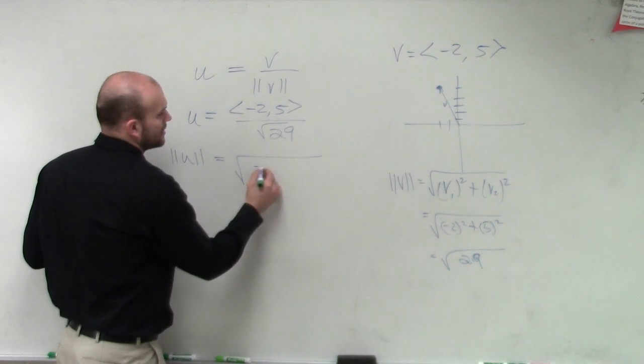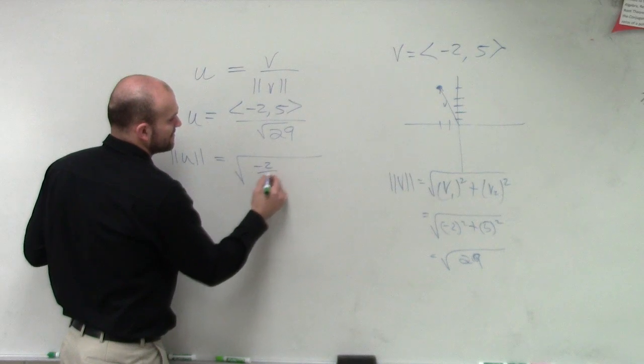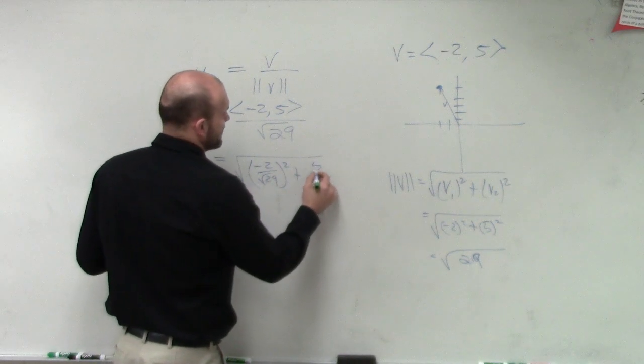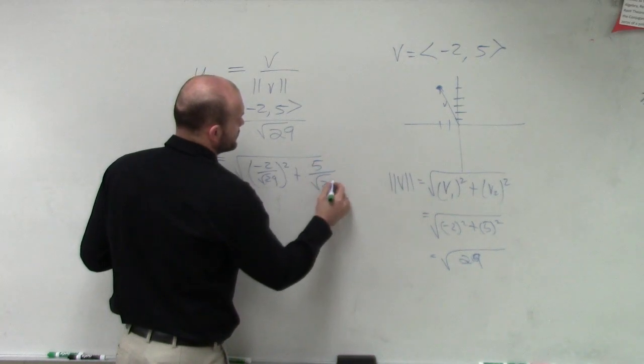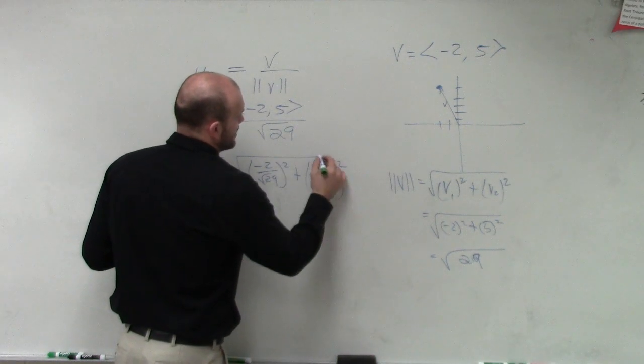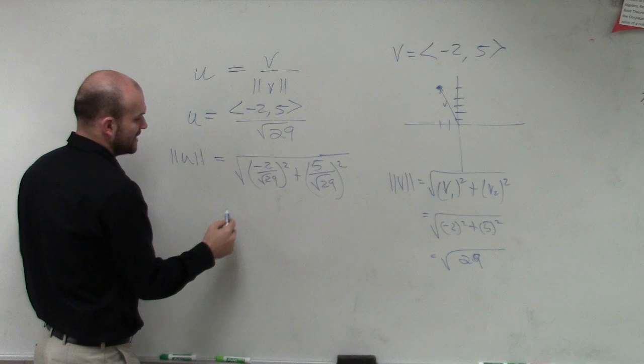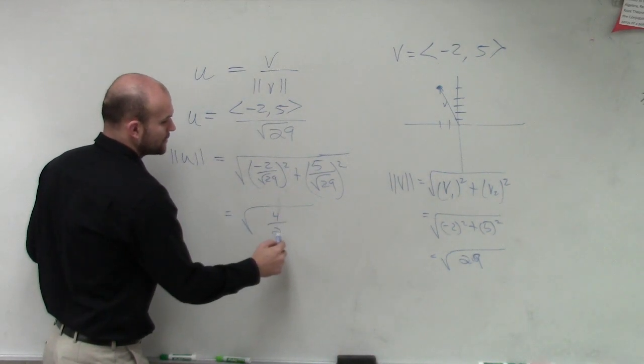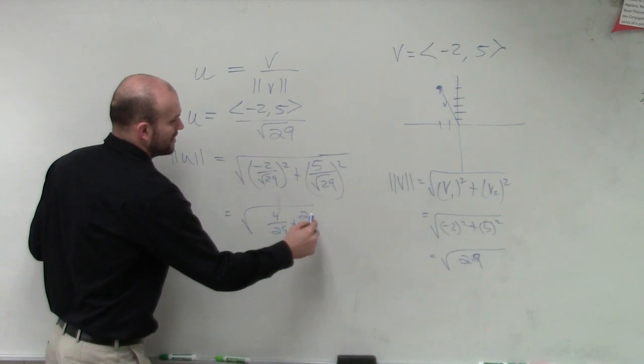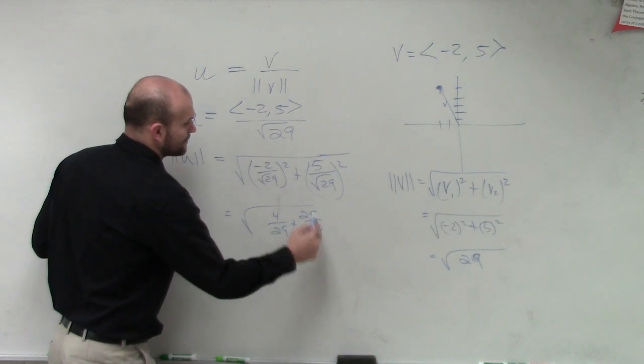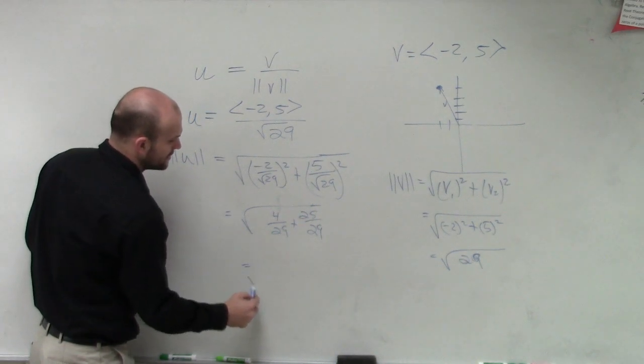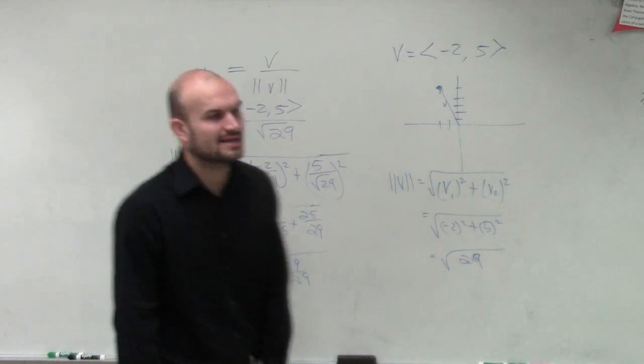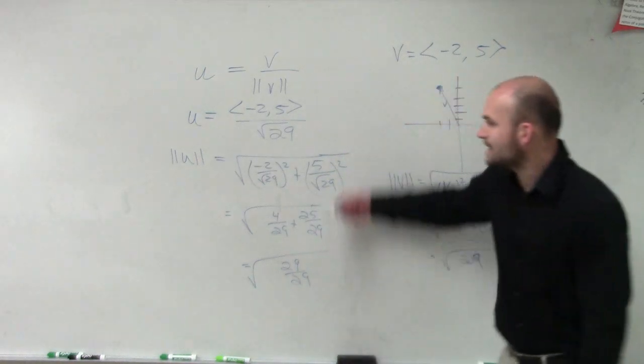So let's take the magnitude of these two components. It's going to be the square root of (-2 / √29)² plus (5 / √29)². Then this ends up being 4/29 plus 25/29, which equals the square root of 29/29. Is the square root of 29 over 29 equal to 1? Yes.